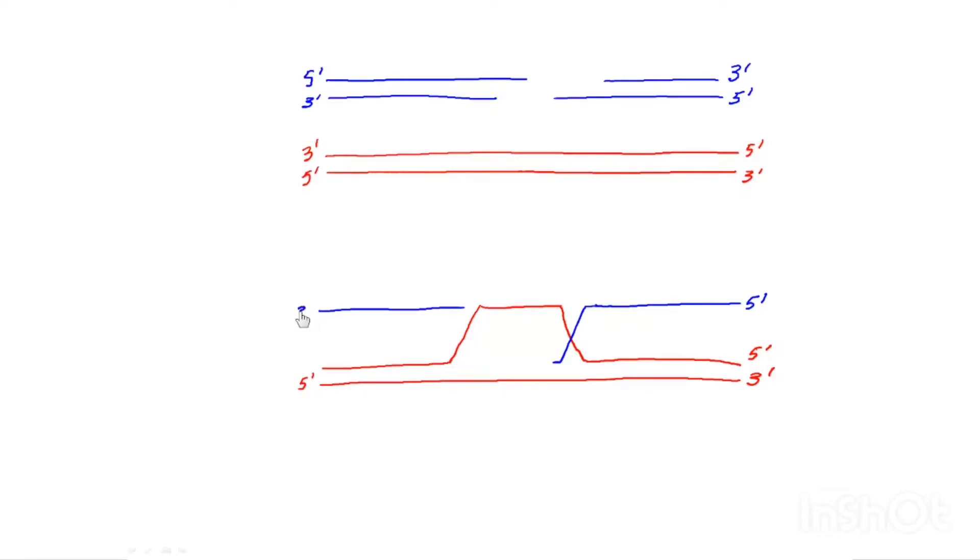Now there is another strand of DNA from the DNA double-strand break. And that strand I'm drawing right here. Again, I'm going to keep track of the 5' and 3' overhangs.